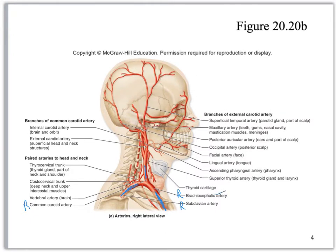The brachiocephalic is the branch off of the aorta, and then it is going to split into the subclavian and right common carotid. You'll notice that on the model, even though everything is colored in red and they're putting the word 'artery' at the end, you need to do the same thing. Always write 'artery' at the end or 'vein' at the end because some of these things share names, and if you don't indicate which one it is, we don't know that you know what you're talking about.